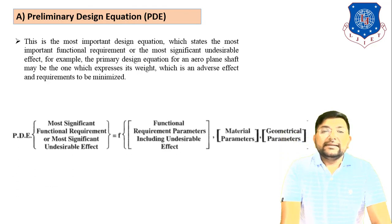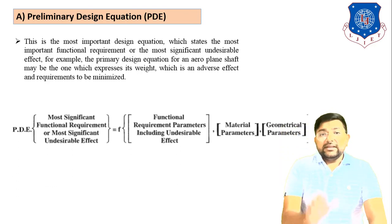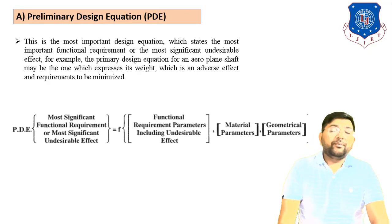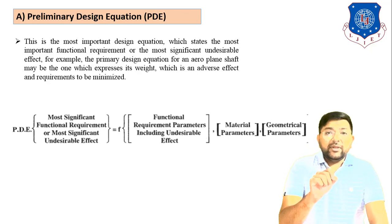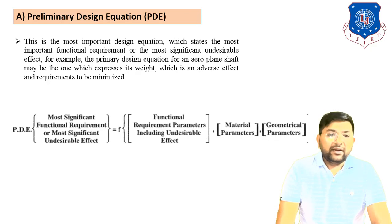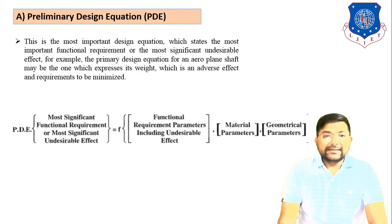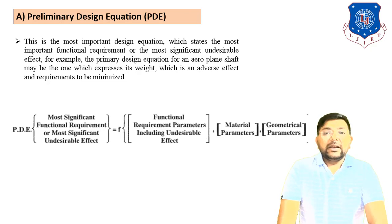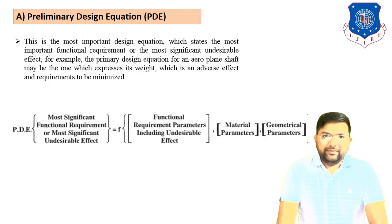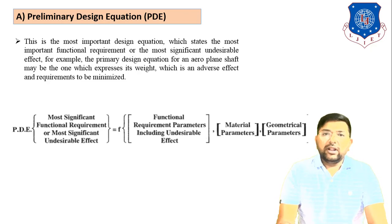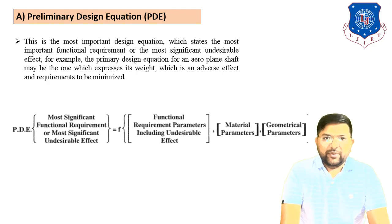So the Preliminary Design Equation is: PDE = f(functional requirement parameter including undesirable effect, material parameter, geometric parameter). In the Preliminary Design Equation, we consider all three parameters: functional requirement parameter, material parameter, and geometric parameter.